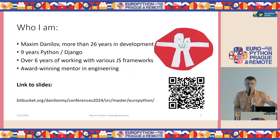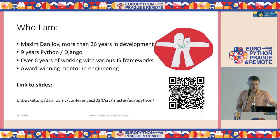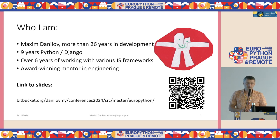Who am I? I'm Maxim Danilov. I am more than 26 years in commercial software development, and nine years I worked with Python and Django. Around six years I am also involved in work with different JavaScript frameworks, and I won multiple times awards like a super mentor in engineering.